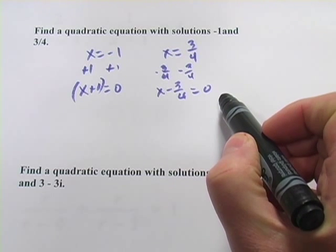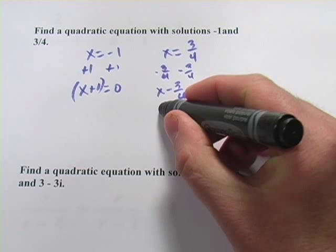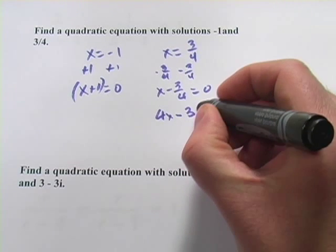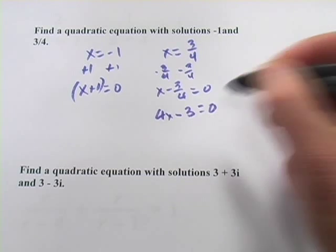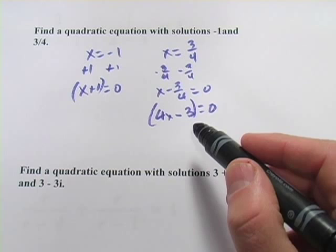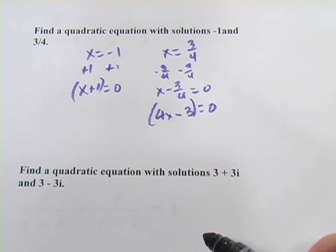So I'm going to multiply both sides of this equation by 4. That would give me 4 times x is 4x. Negative 3 fourths times 4 is negative 3. And 0 times 4 is still 0. So my factor then is 4x minus 3. And my other factor is x plus 1.